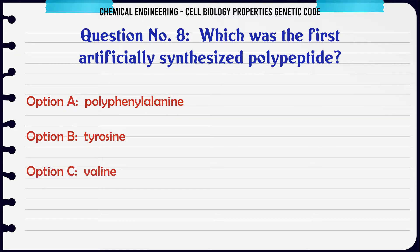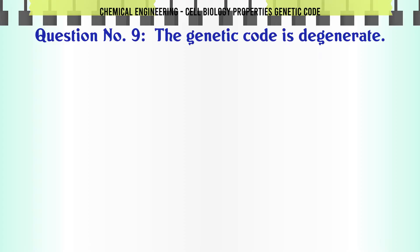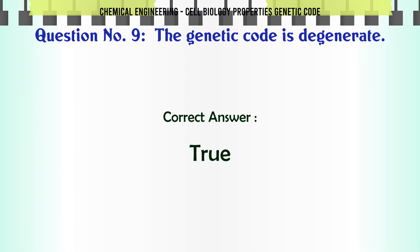Which was the first artificially synthesized polypeptide? A) Polyphenylalanine. The genetic code is degenerate — A) True, B) False. The correct answer is True.